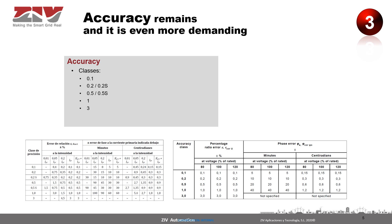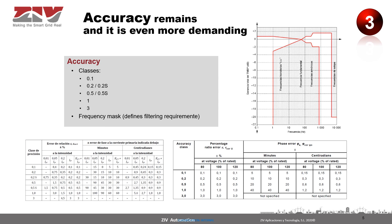Even though we have a low power or low voltage output, what we don't lower at all is the accuracy. The accuracy of the sensors remains. The requirements for accuracy are the same as for the transformers. And not only that — for sensors, there is a new requirement that appears, which is the frequency mask. The frequency mask defines the response of the sensors to frequency in such a way that we can guarantee that high-frequency or low-frequency phenomena are measured correctly. So the accuracy remains, and it is even more demanding than in the case of the transformers.